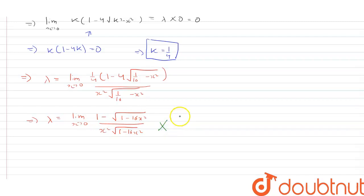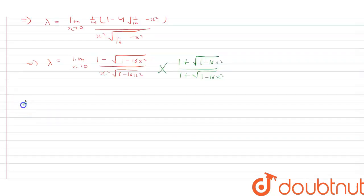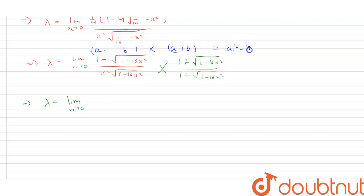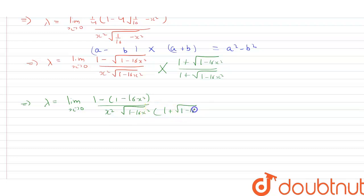Now rationalizing the numerator by multiplying by 1 plus root of 1 minus 16x squared upon 1 plus root of 1 minus 16x squared. This implies lambda is equal to limit x tends towards 0. Here the property a minus p into a plus p equals a squared minus p squared can be used. Therefore this becomes 1 minus (1 minus 16x squared), divided by x squared into root of 1 minus 16x squared into 1 plus root of 1 minus 16x squared.